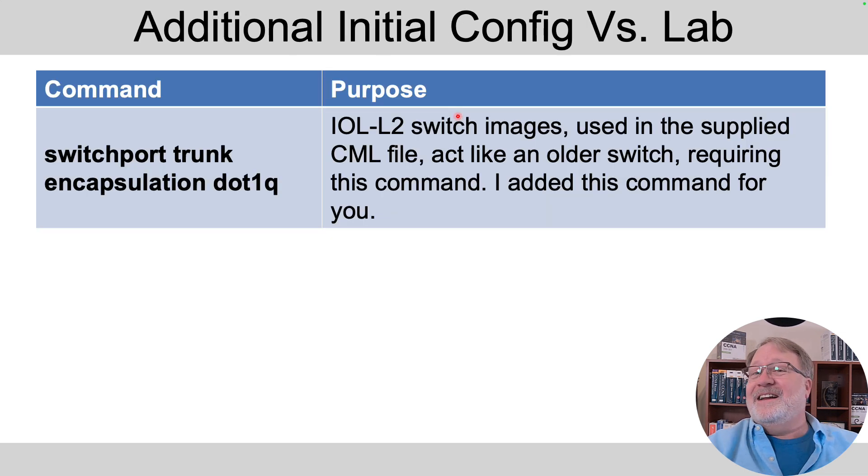The other thing is, I added one command to all the interfaces in the CML switches. This has to do with the fact that those switches continue to keep an old switch IOS command around, switchport trunk encapsulation. Older switches had this command with a parameter of either dot1Q or ISL, in the era for which switches supported both of those VLAN trunking encapsulations. However, modern switches support only dot1Q, and that's great. But since the CML switch, the IOL L2 image as it's known, requires this command, I went ahead and added it for you.